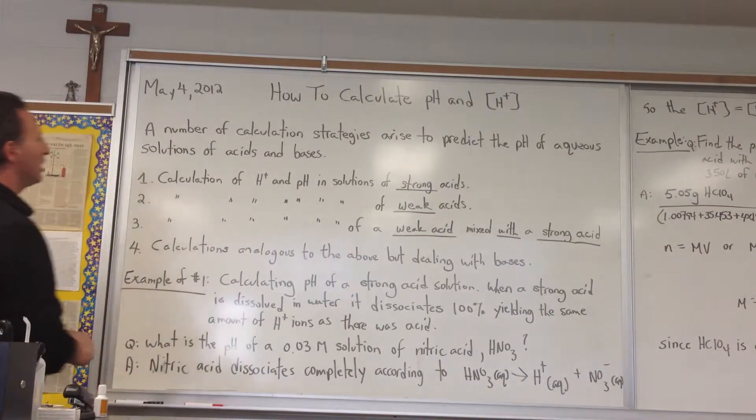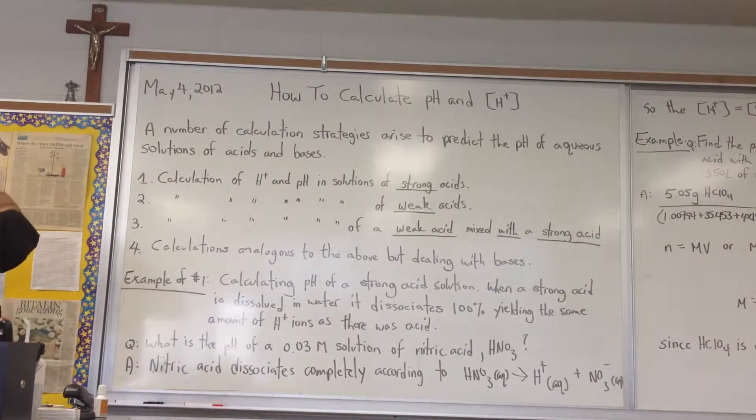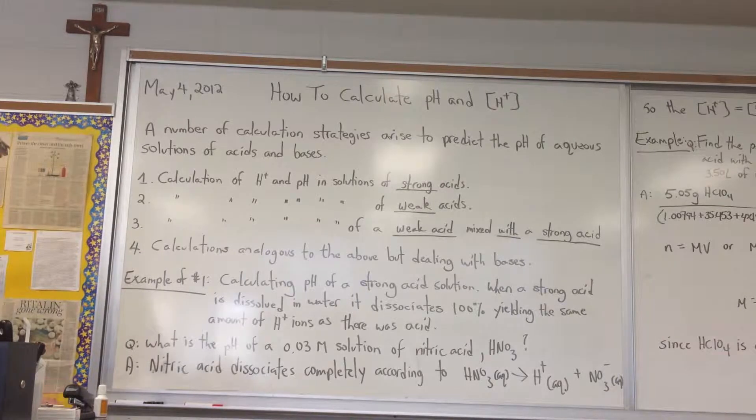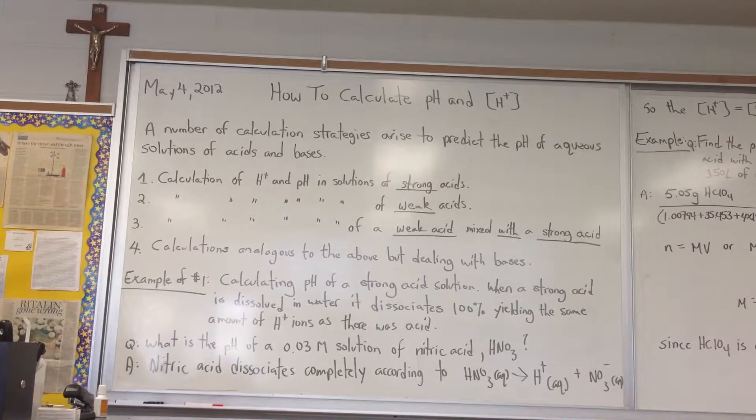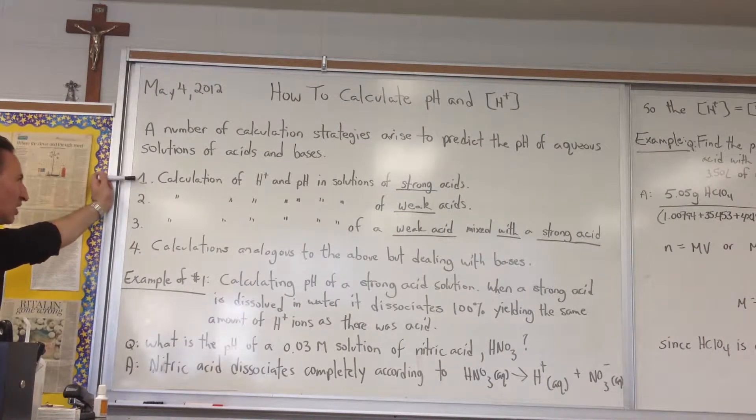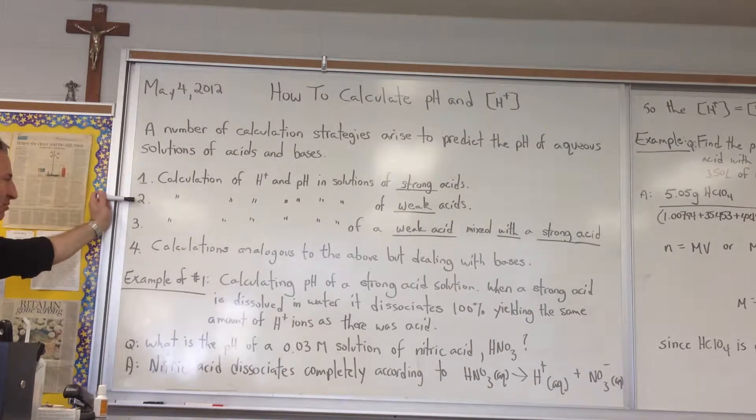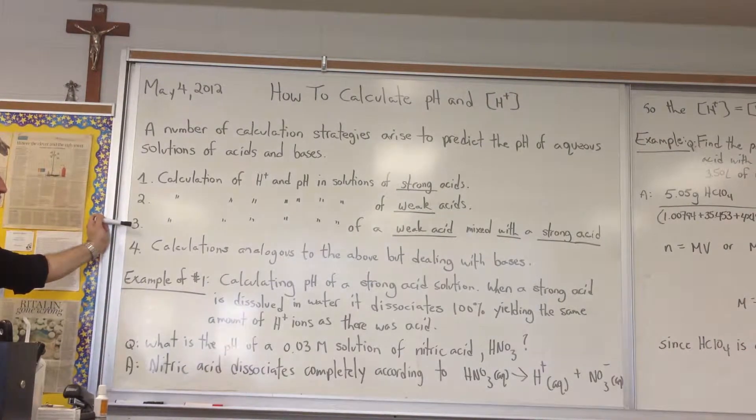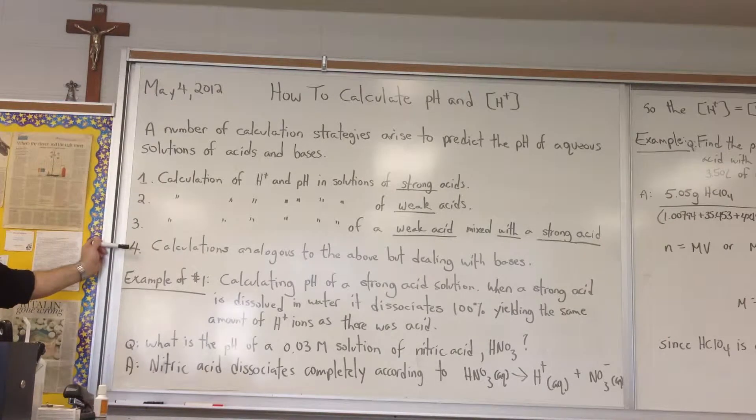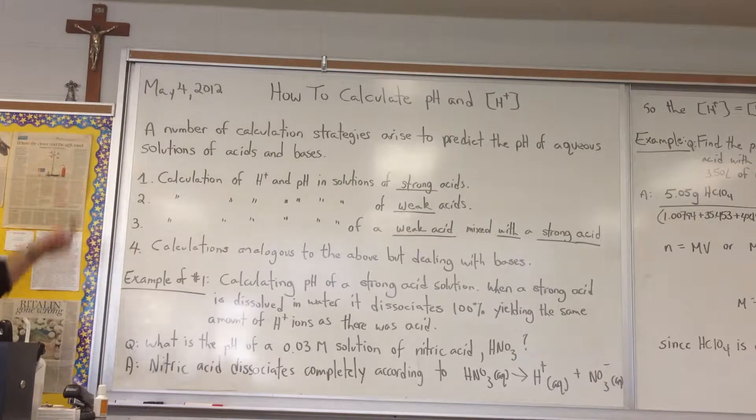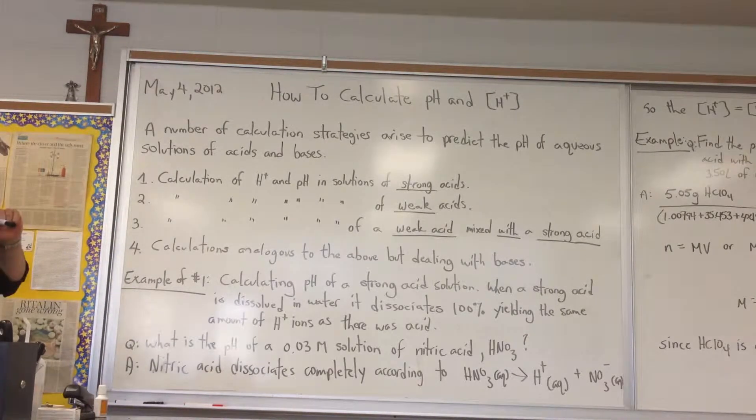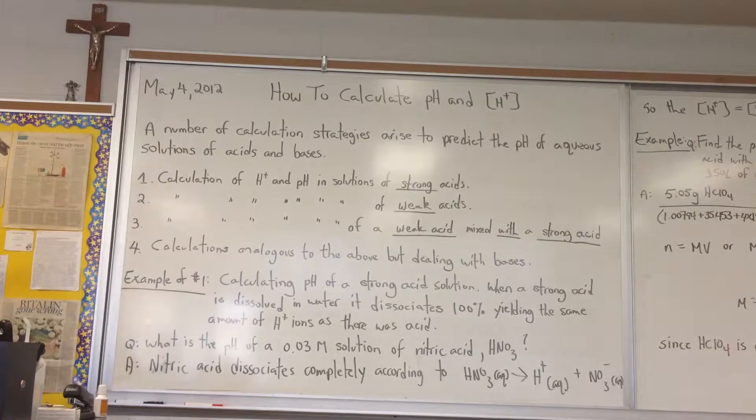Today's class is about how to calculate pH and hydrogen ion concentration. A number of different situations arise when calculating pH. One is the calculation with strong acids. You also get a separate calculation for weak acids, and another for a combination of weak acids and strong acids. The same calculations are done analogously with bases: strong bases, weak bases, and a mixture of a weak base with a strong base.